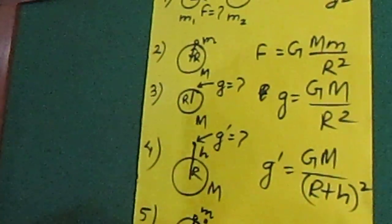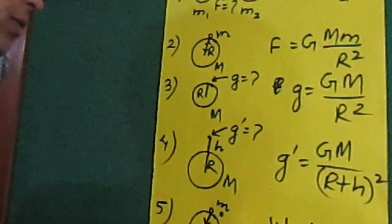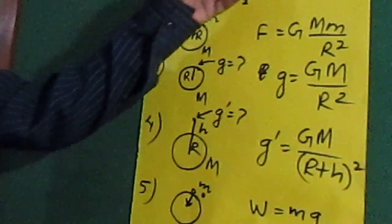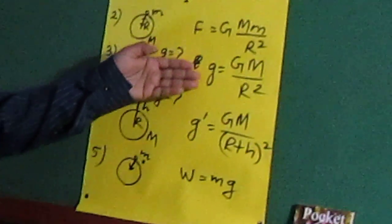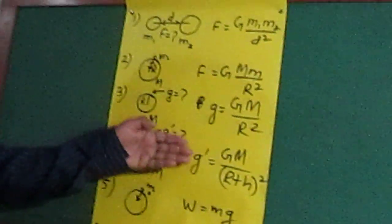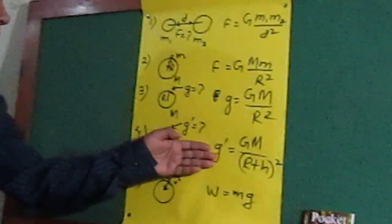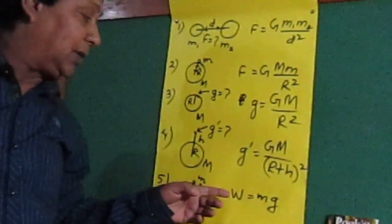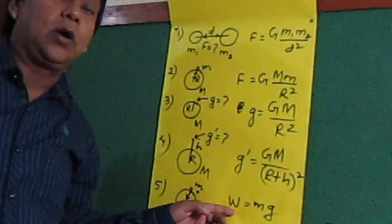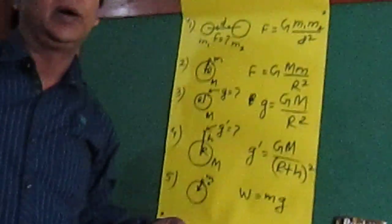These equations are normally used to calculate gravitational force, gravity, acceleration due to gravity, acceleration due to gravity at a certain height, and the weight of the body on the surface of the Earth.